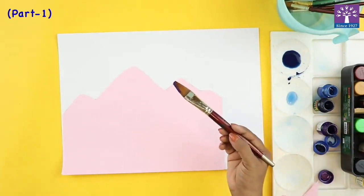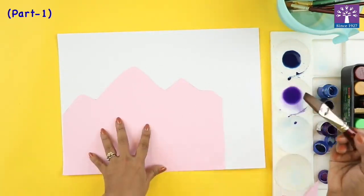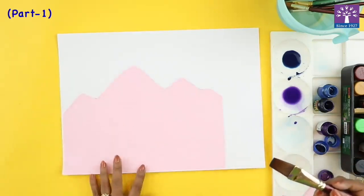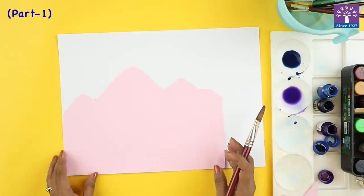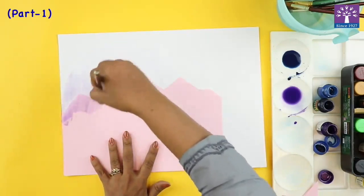I'm going to start. I'm holding the paper, this stencil pink color stencil of a mountain that we have created. I'm holding it firmly and going to paint it upwards. I'm going to give upward strokes.